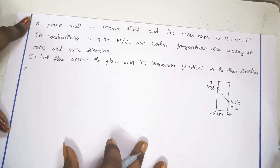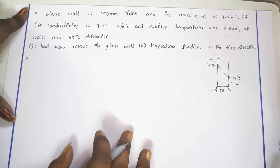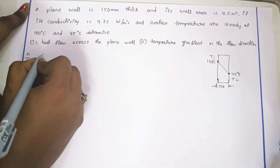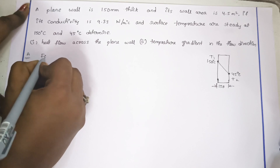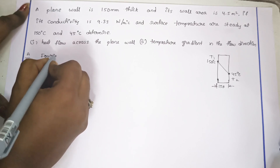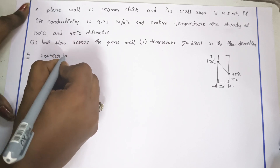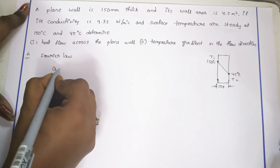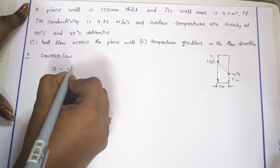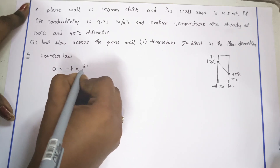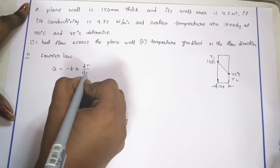Now we apply Fourier's law. Using Fourier's law, the formula is: q is equal to minus k A dT by dx.